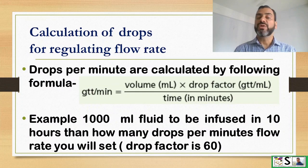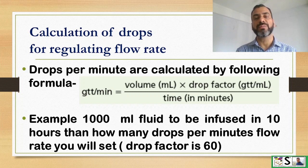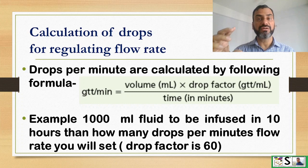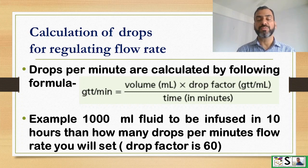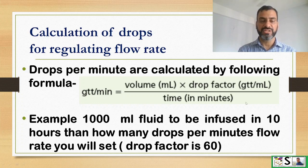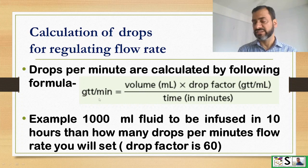How do we calculate the drops for regulating the flow rate — that is, how many drops should go per minute? We count the drops in the chamber that we see in the IV set or drip set. Calculating the drops per minute is very simple using this formula: GTT per minute, or drops per minute. GTT means gutta — it is a Latin word used for drops.